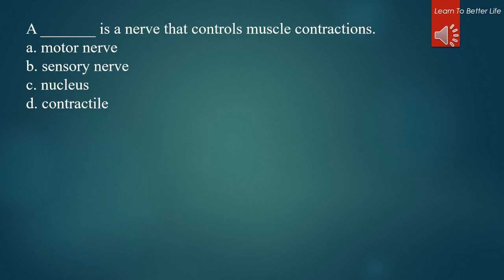What is a nerve that controls muscle contractions? A. Motor nerve. B. Sensory nerve. C. Nucleus. D. Contractal. The answer is A. Motor nerve.